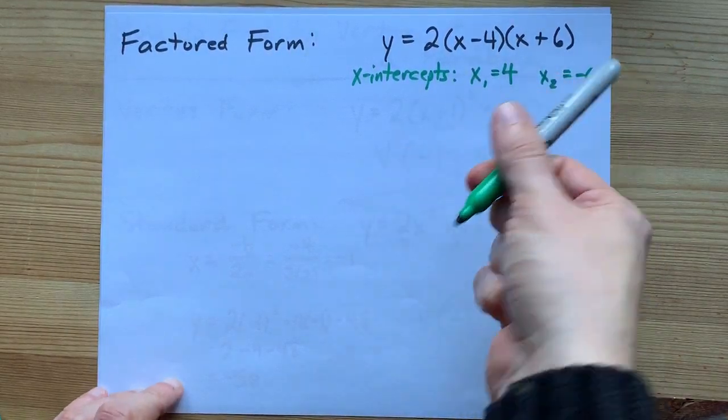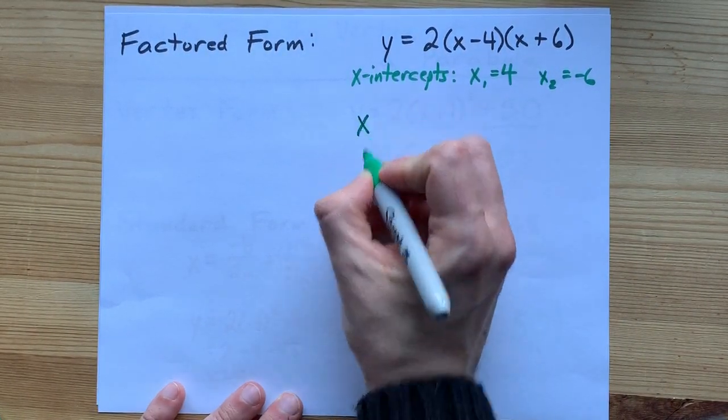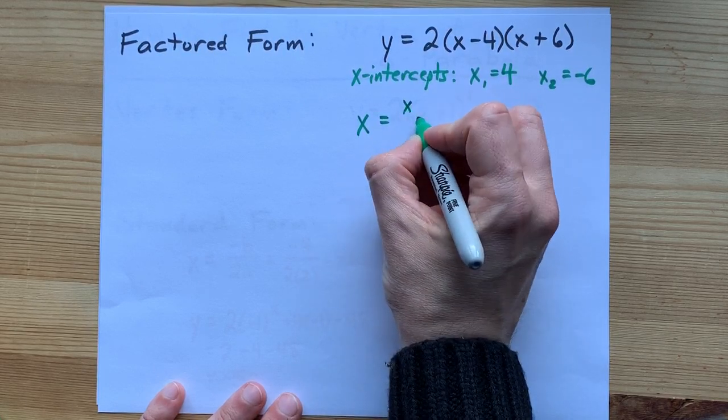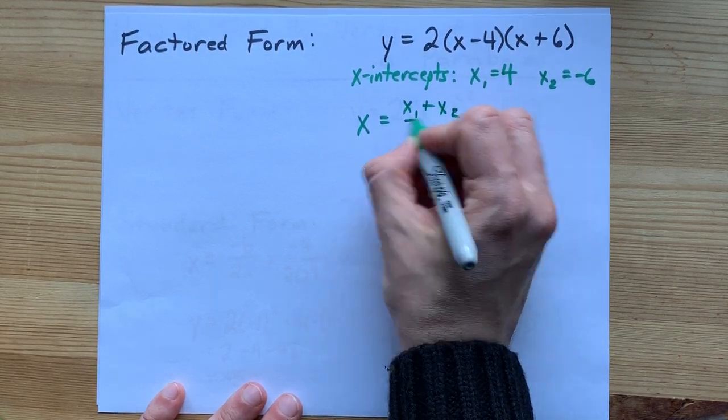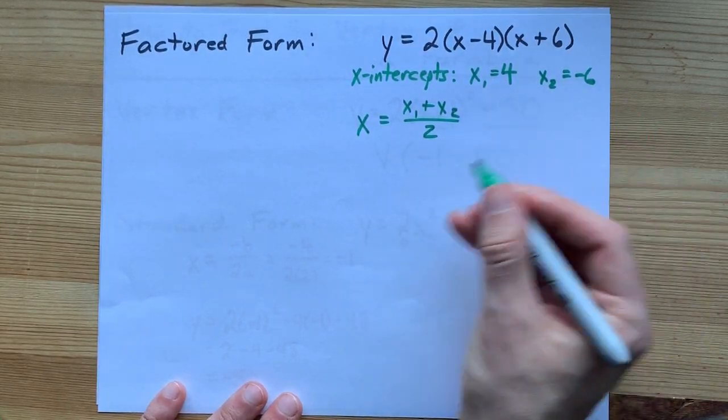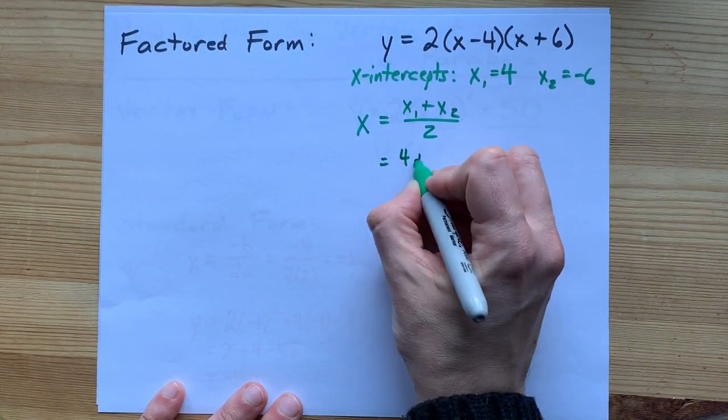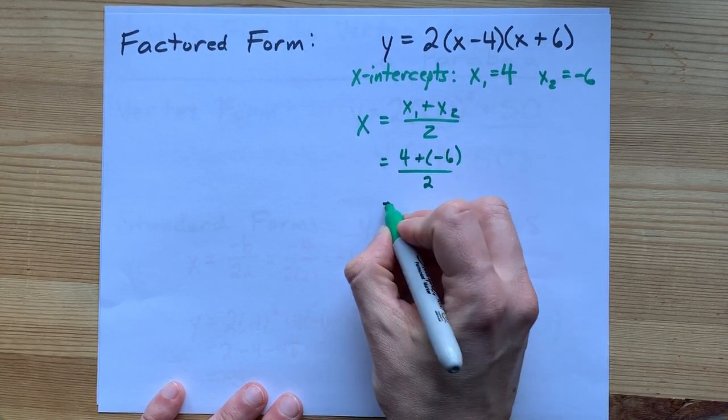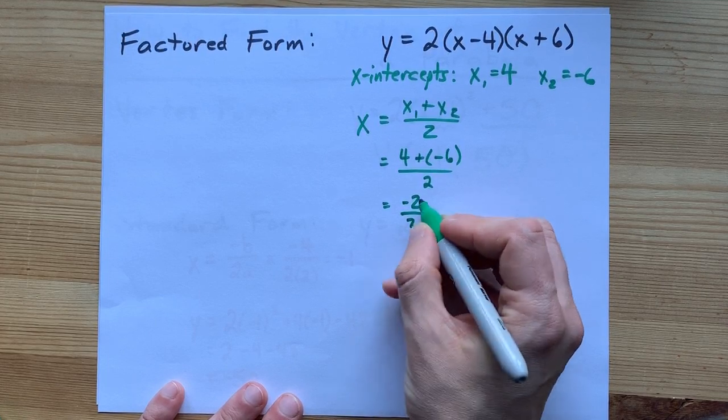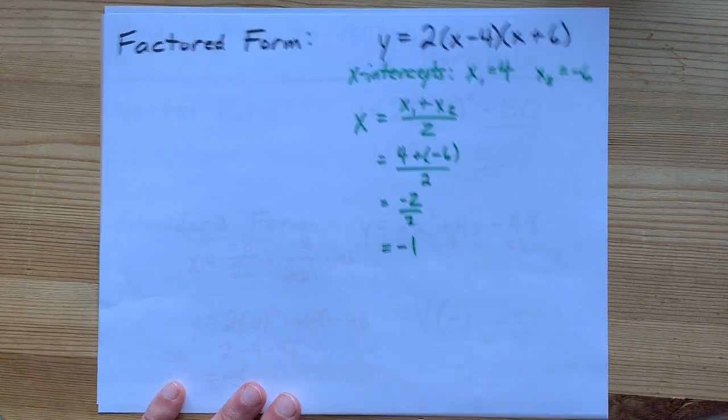What matters after you get the x-intercepts is that the axis of symmetry, or the x-coordinate of the vertex, is x1 plus x2 divided by 2. It's actually the average of the 2 x-intercepts. 4 plus negative 6 divided by 2. 4 plus negative 6 is negative 2. And when you divide that by 2, it gives you negative 1.